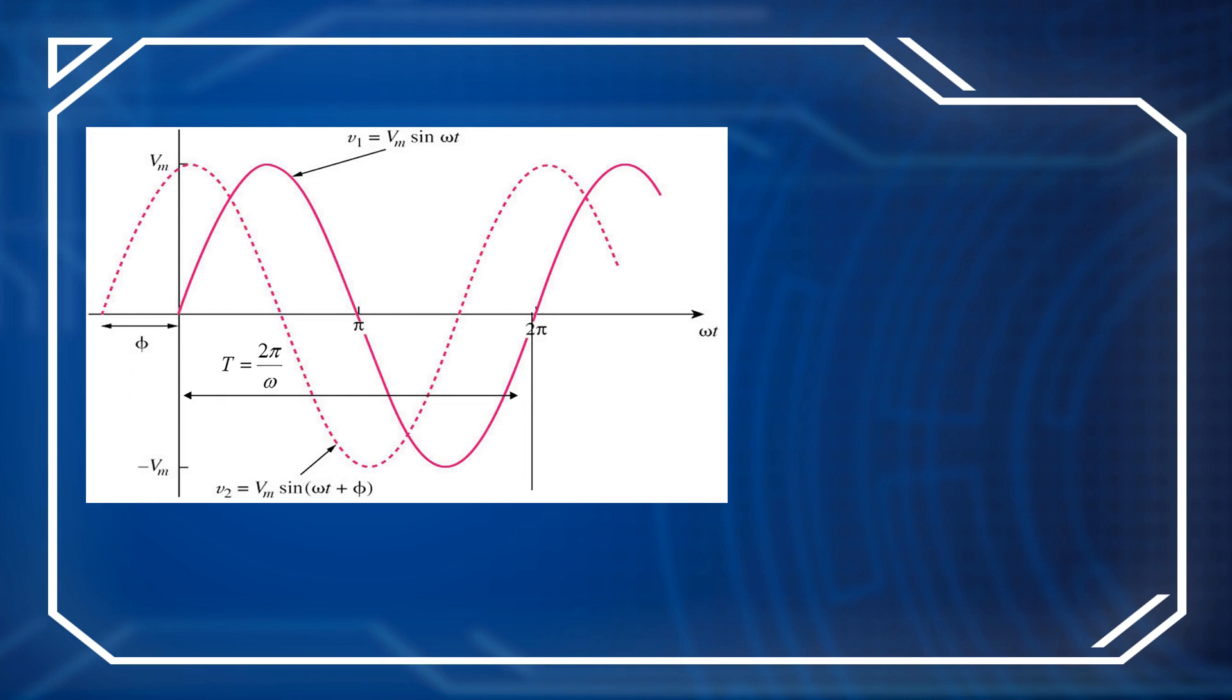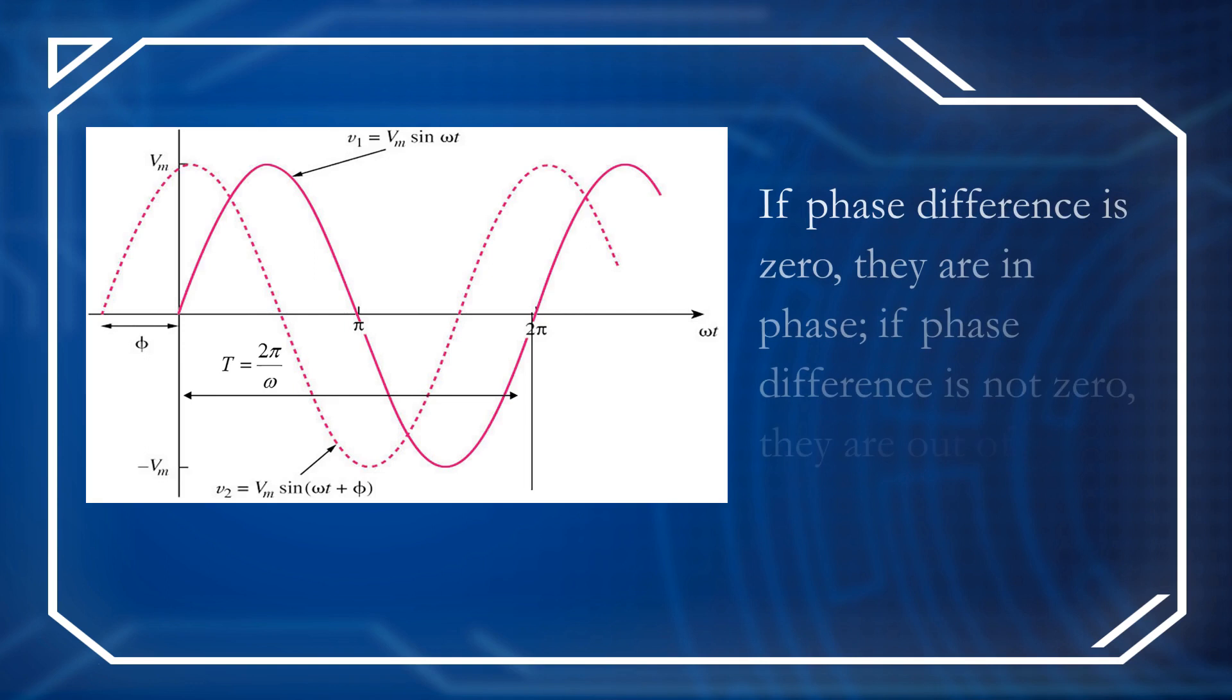Only two sinusoids with the same frequency can be compared by their amplitude and phase difference. If the phase difference is zero, they are in phase. However, if phase difference is not zero, they are out of phase. Obviously, the two sinusoids inside the graph are out of phase.